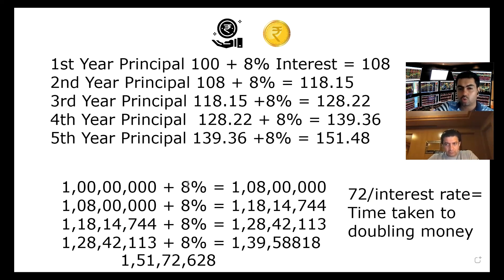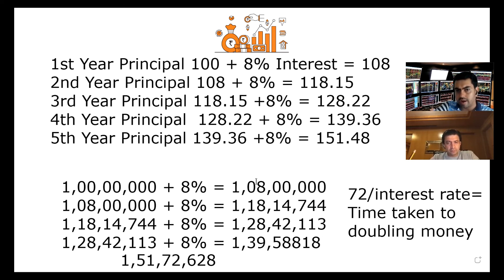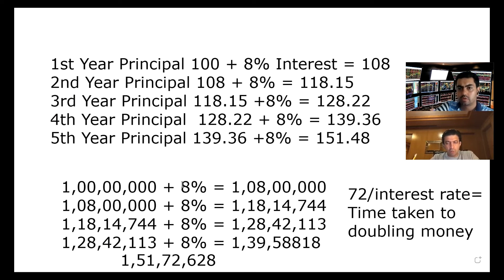Do you want to see the difference growing at 12% a year? Now do 72 divided by 8 and see how long it will take to double your money. 9 years. If you continue compounding for 9 years at 8%, your 1 crore will become 2 crores. That's how many years it takes at 8% growth.